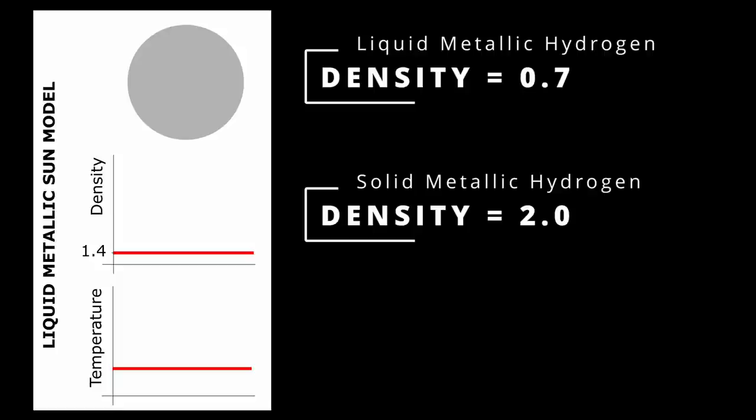If we consider this and look at the estimated density of the sun we can see this comes in at about 1.41 g per cm³. More than double that of liquid metallic hydrogen.